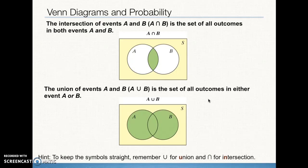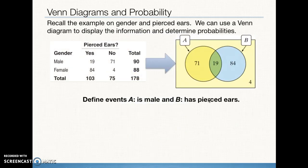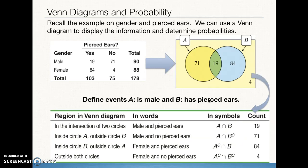We use the U symbol for union and something that looks like an upside-down U for intersection. Here is our two-way table along with the Venn diagram that goes with it. Students who are not male and do not have pierced ears are outside the two sets A and B but still in the box — this is why we always have a box around our Venn diagram. In words, symbols, counts, and Venn diagram areas, you can stop the video here and read through this table — it's super useful. I want you to be able to represent all those different outcomes in symbols, in counts, in percentages or fractions, and also describe them in words.